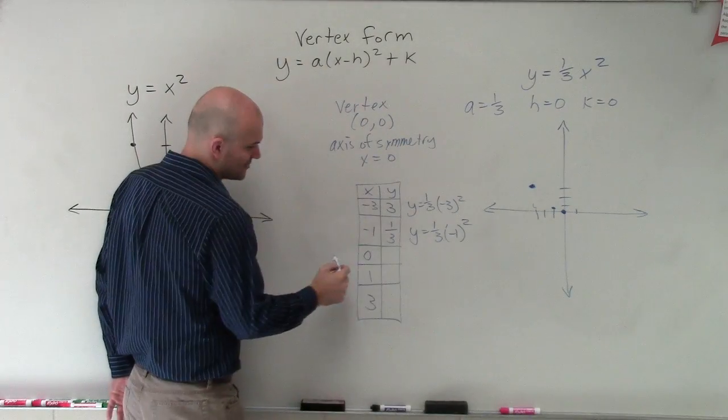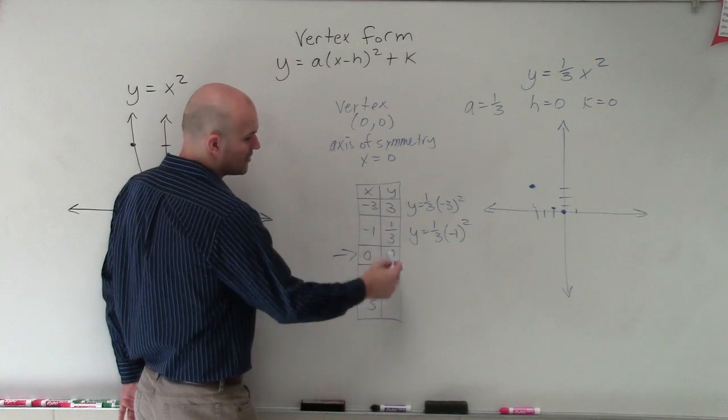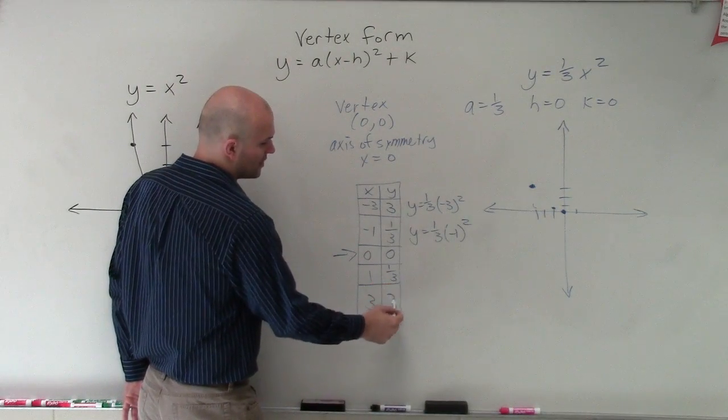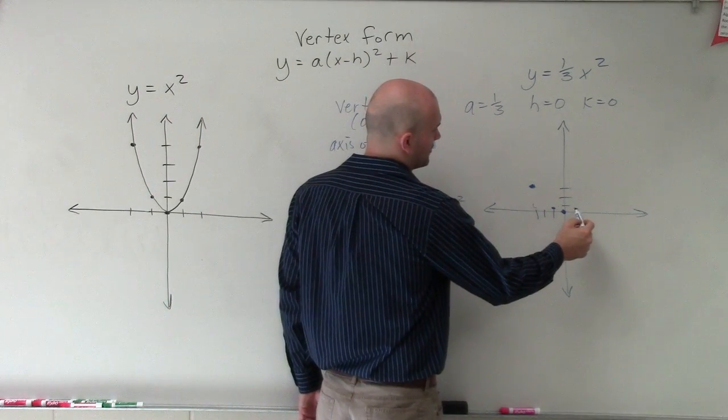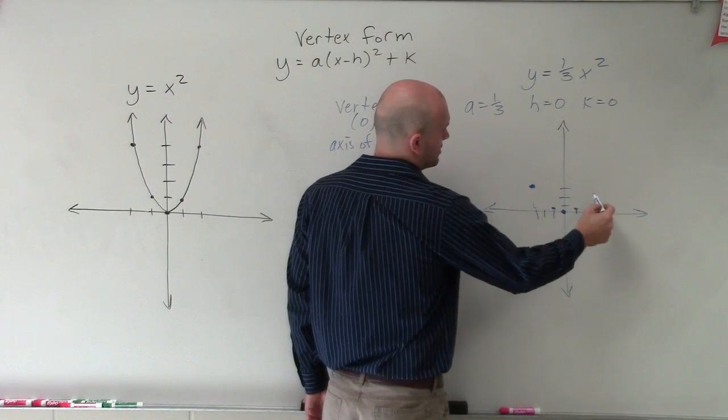So now I can reflect that. So here's my axis of symmetry. Now I'm going to reflect these points to 1/3 and 3. So over 1/3, up 1/3, 1, 2, 3, up to 3.